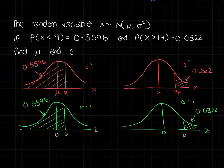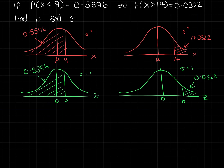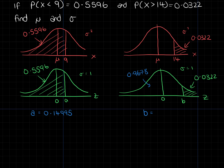Now I need to set up two equations. Using inverse normal on the calculator for 0.5596, I get a equals 0.14995. For the second one — if you've got the bigger calculator you can look up that area directly, otherwise look up 1 minus 0.0322, which is 0.9678 — that gives b equals 1.8494.